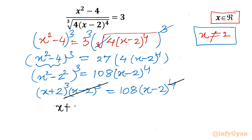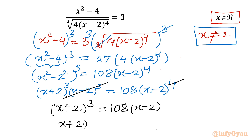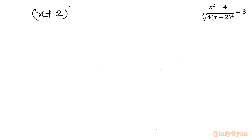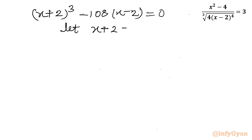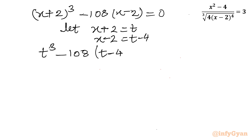What is left is (x + 2)³ = 108(x - 2), or taking all terms to one side: (x + 2)³ - 108(x - 2) = 0. Now I will consider a substitution: let x + 2 = t, so x - 2 = t - 4. Substituting gives t³ - 108(t - 4) = 0.